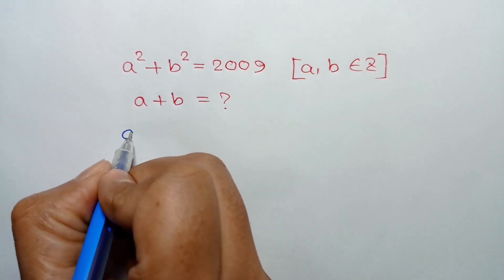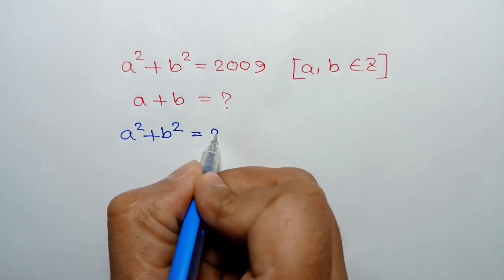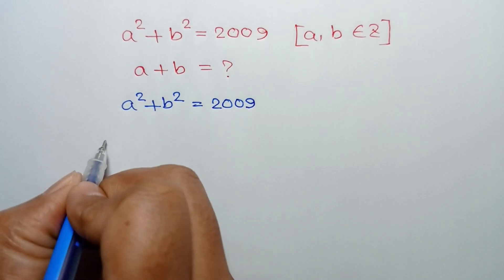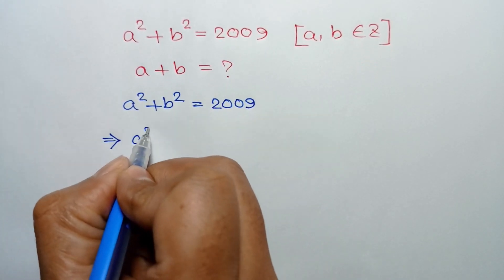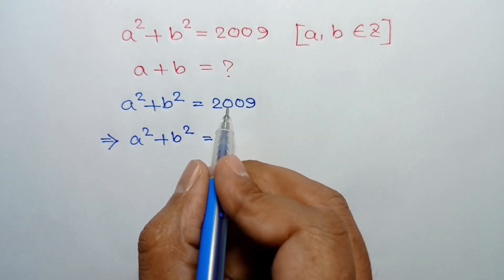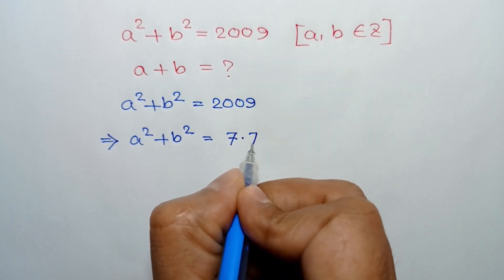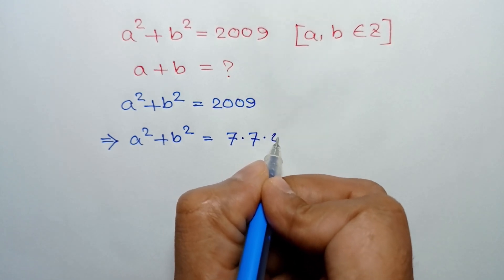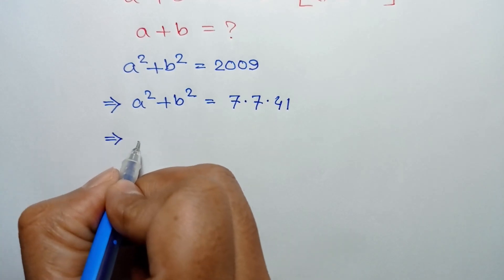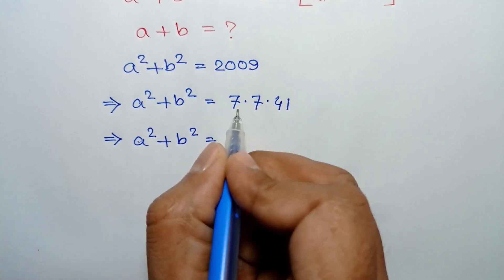We have been given a squared plus b squared is equal to 2009. The prime factorization of 2009 is 7 times 7 times 41.